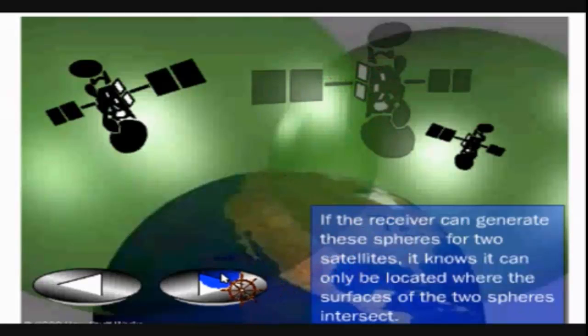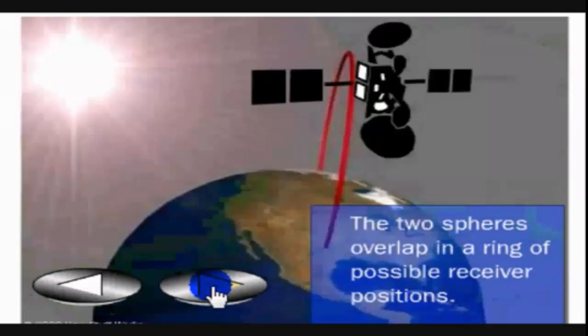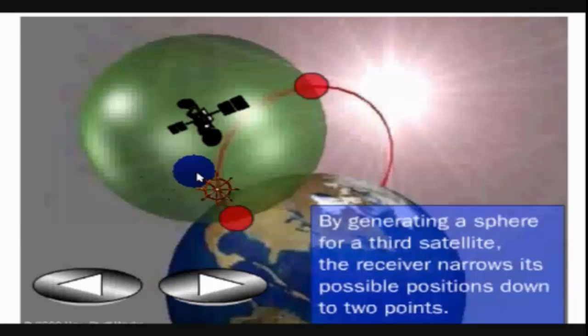To find the exact location, we can represent the intersecting area as a circle. This is the circle we get from the intersecting area of the two spheres. Let us view this in a better way.